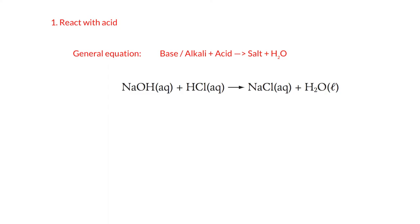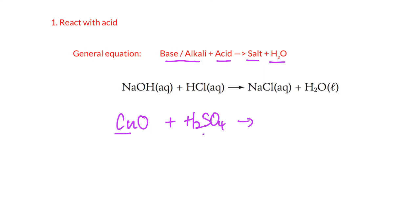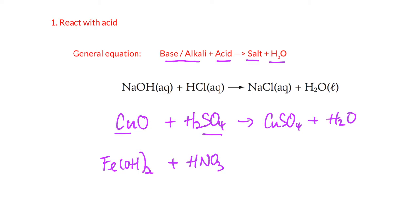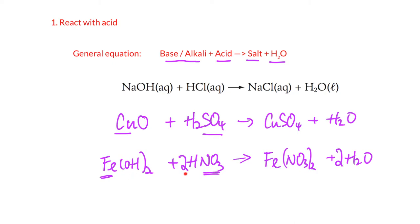In this video we cover the first two reactions. First: base or alkaline reacts with acid to give salt and water. For example, sodium hydroxide with HCl gives sodium chloride and water. Copper oxide with sulfuric acid gives copper sulfate and water. Iron(II) hydroxide with nitric acid gives iron(II) nitrate and water — and here the ratio is 1 to 2, so you multiply accordingly; each OH gains 1H to form water, giving 2H₂O.